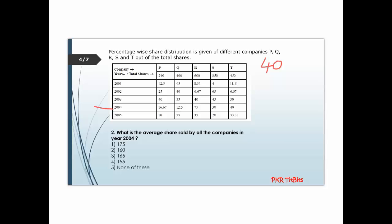12.5 percent of 400 is 400 divided by 8, which is 50. For the next company, 75 percent is 3/4, so 3/4 times 600. Then 30 percent of 350: 10 percent is 35, 20 percent is 70, so 30 percent is 105.